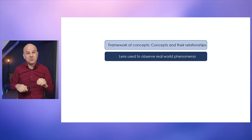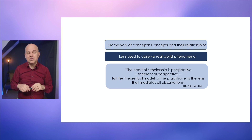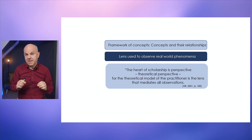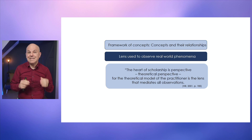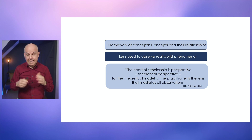This is well encapsulated in Hill's 2001 quote, which says that the heart of scholarship is perspective — theoretical perspective. The theoretical model of the practitioner is the lens that mediates all observations. In practice, this means that depending on the lens you choose, you are going to observe the phenomenon in a certain way. If you were to use two different lenses, you would see the same phenomenon in two different ways.